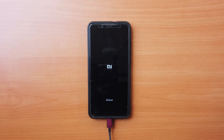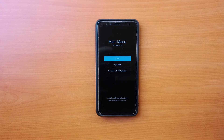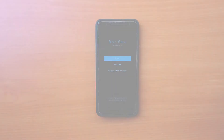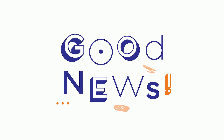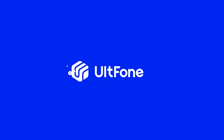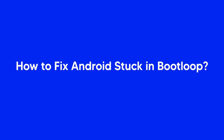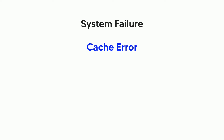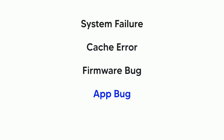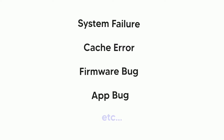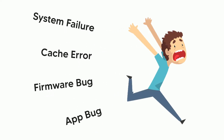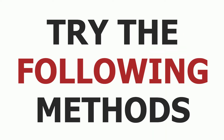Is your Android phone stuck in a bootloop? Is your phone booting into recovery mode instead of normal mode? We have good news for you. A bootloop might be caused due to several reasons, including system failure, cache error, firmware bug, or a bug in an app. Any of these problems might prevent the phone from booting into normal mode. You can try the following methods to get out of the bootloop.